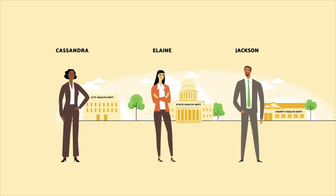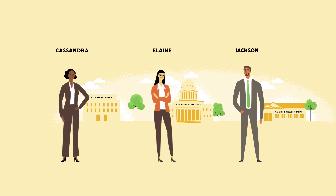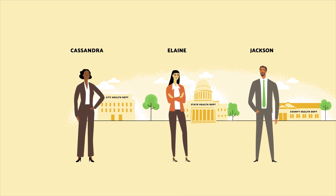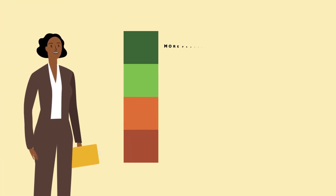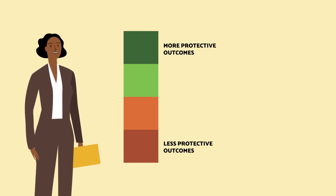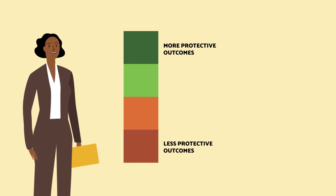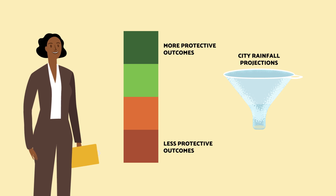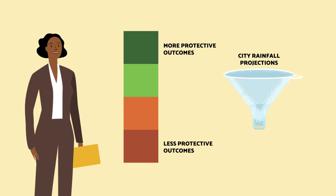If you would like to revisit our practitioners' evaluation journeys so far, please refer back to the previous videos in this series. To describe the new city greening project, Cassandra's logic model uses two of our design principles. She is color coding her outcomes and using rainfall projections to illustrate the project's potential impacts.